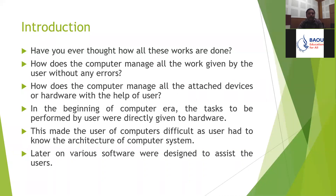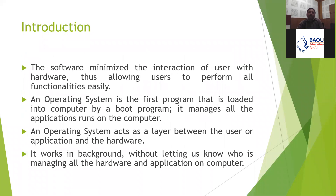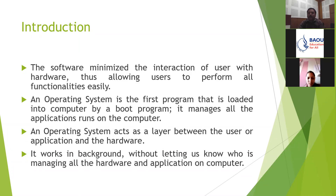Every processor has a unique set of instructions for its execution. In earlier days you had to know which instructions were specific to a particular processor before you could write your program. Later, software was designed to assist users. A layer between hardware and user was introduced, and that layer is called the operating system. Its objective is to minimize the interaction of the user with hardware and allow the user to perform all functionality easily.